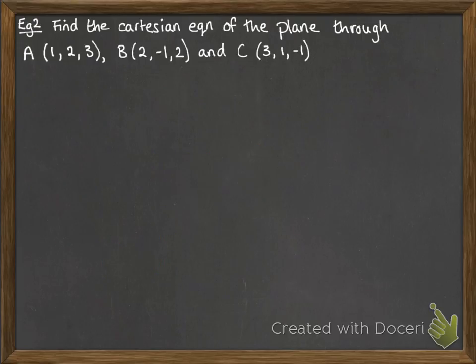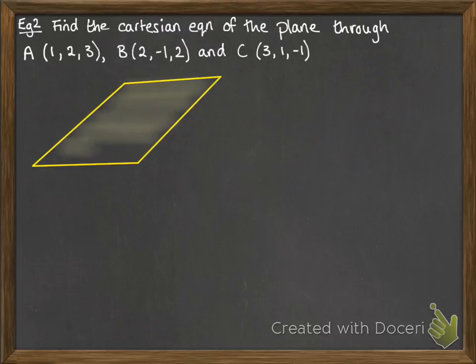Here's another example of using vector product to make things a little easier. So we want to find the Cartesian equation of the plane that's through these three points. So it looks like this.